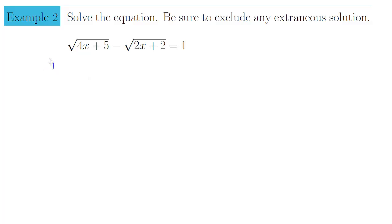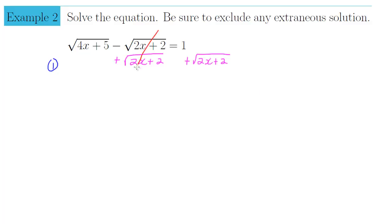Step 1 is always to isolate one of the square roots. I'm going to choose to isolate √(4x+5), which means I have to bring the other quantity to the other side. I'm going to add √(2x+2) to both sides. This will get rid of √(2x+2) on the left and isolate √(4x+5), leaving us with: √(4x+5) = 1 + √(2x+2).